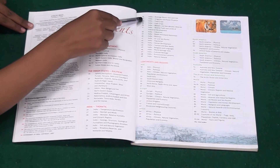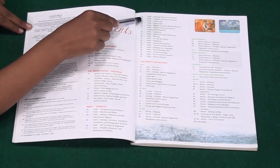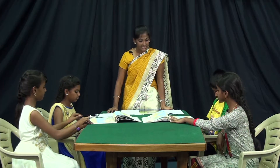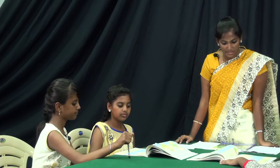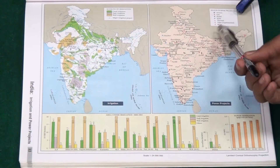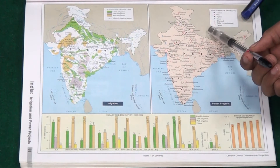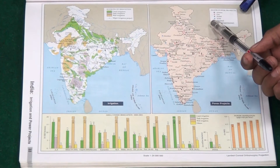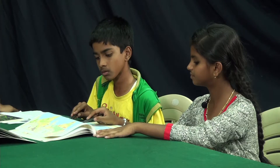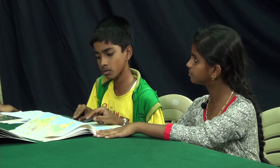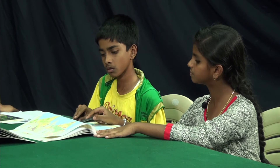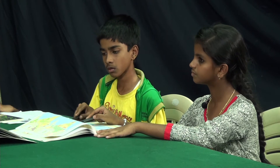Here it is — page number 33. Can you now find out where is the legend of symbols in this map? Here it is. Who will read out what are the legend of symbols?